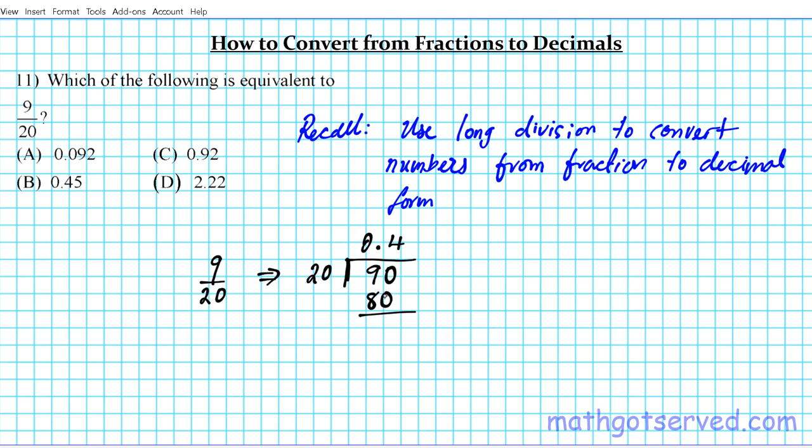So 20 goes into 90 four times, and 4 times 20 is 80. Now we're going to subtract. What is 90 minus 80? That is 10.